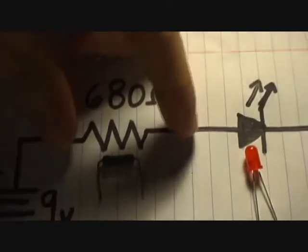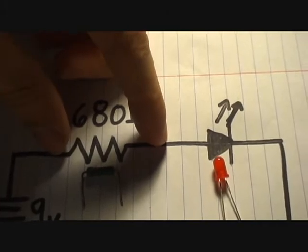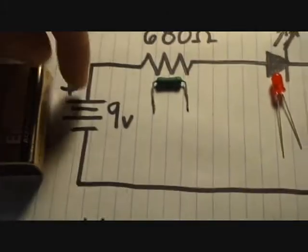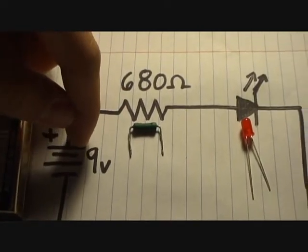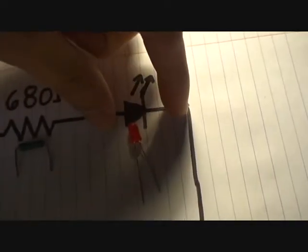The resistor resists, or takes up, the remaining voltage from the 9-volt battery. So this takes up enough voltage to where there's close to 0.7 right here.